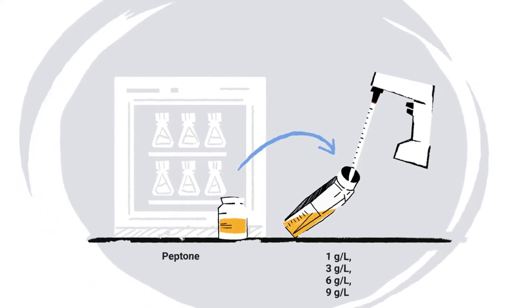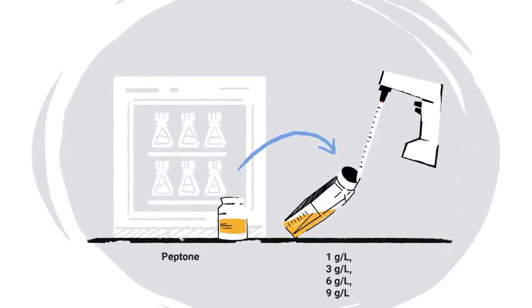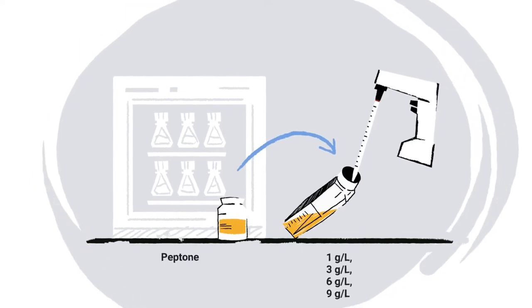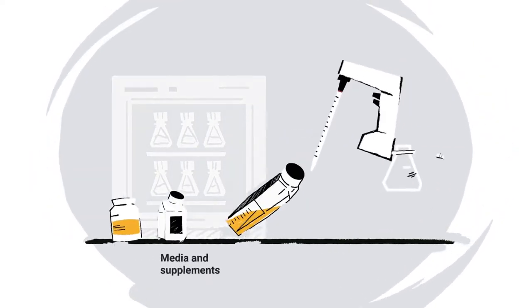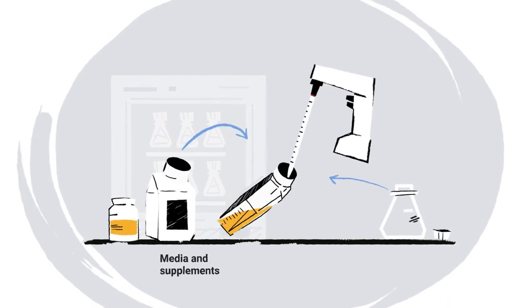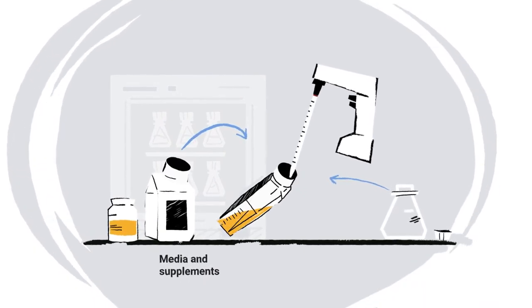You will screen each peptone at 4 concentrations. Also include your current medium as a control. Cultures should be supplemented with glucose, L-glutamine, and any other cell line specific supplements as required.